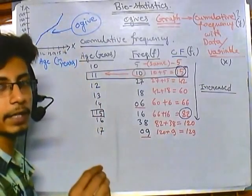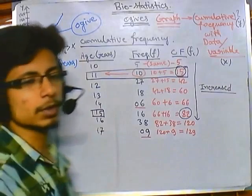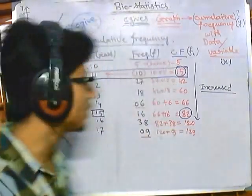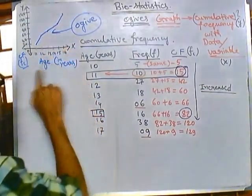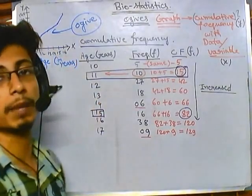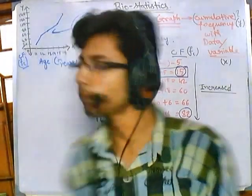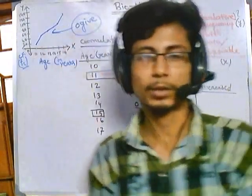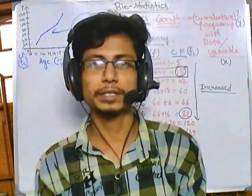Ogive graphs are also important because from them we can derive quartile distributions. By extrapolating horizontal lines from the graph onto the x-axis, wherever they intersect gives us quartile 1, quartile 2, and quartile 3. So that is another key importance of ogives. I hope this video has been helpful — thank you.